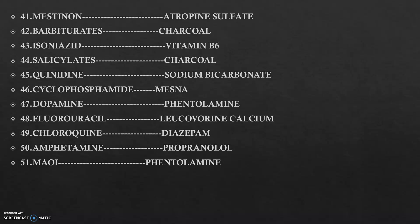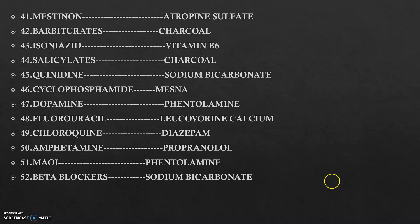For chloroquine poisoning, we use diazepam. In case of amphetamine — which is very important — we use propranolol. In case of monoamine oxidase inhibitors, we use phentolamine. In case of beta-blockers, whenever they are used in a toxic dose, you have to reverse the effect by adding glucagon or sodium bicarbonate. Thank you.